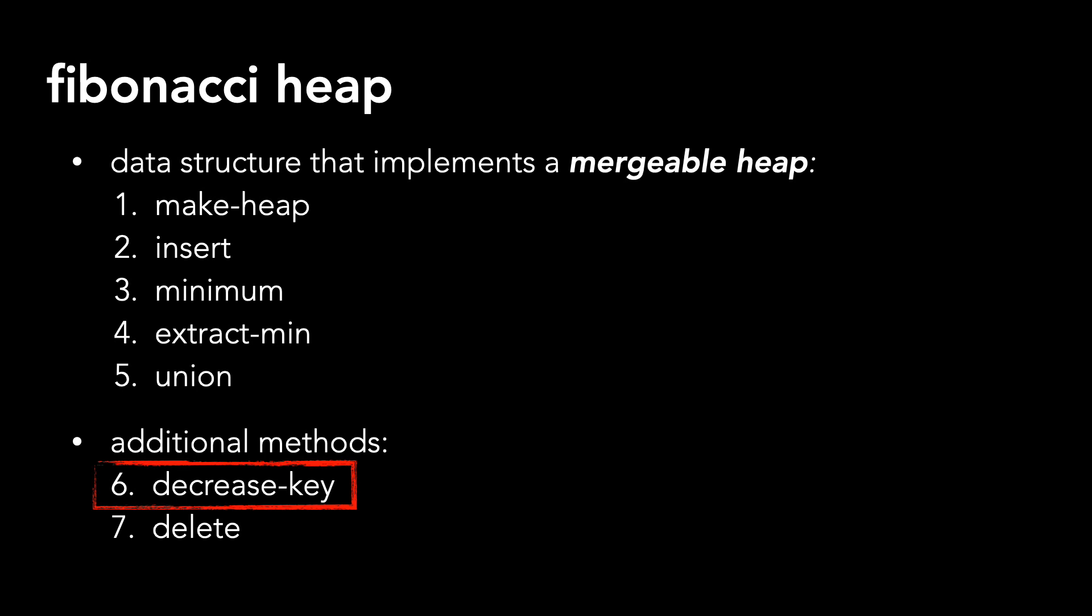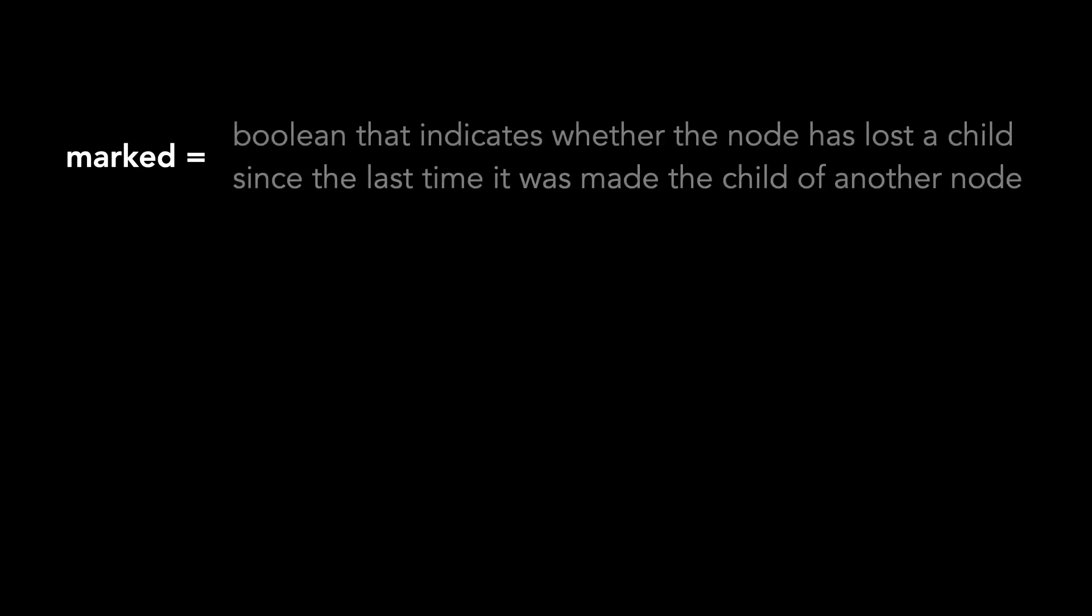Before we look at examples, I want to review the concept of marked, which I briefly discussed in the first video. Marked is a boolean that indicates whether the node has lost a child since the last time it was made the child of another node.